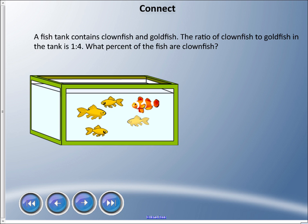One last example. A fish tank contains clownfish and goldfish. The ratio of clownfish to goldfish in the tank is 1:4. What percent of the fish are clownfish? Well, the first thing we have to acknowledge is this is not possible—clownfish are saltwater fish and goldfish are not, so they would never exist together. But for the sake of my picture, let's just pretend they can.